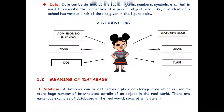An employee in a company has an employee number, employee name, salary, department, and many more fields. Likewise, a player has a particular game, a name, experience, number of matches, records, and achievements. These are all various forms of data. Data describes any real practical entity around us.